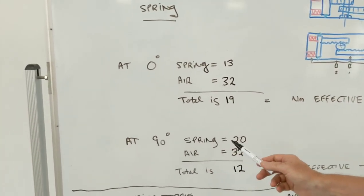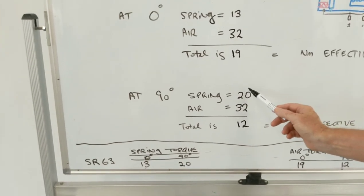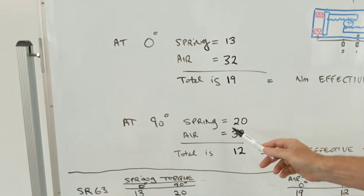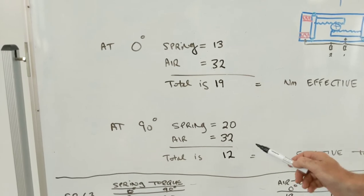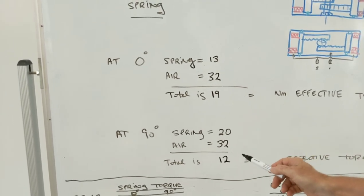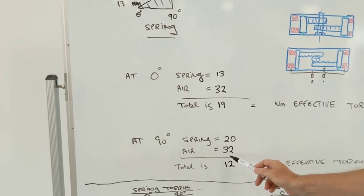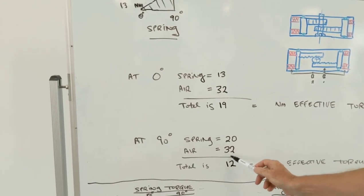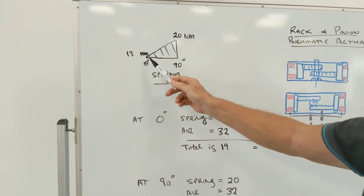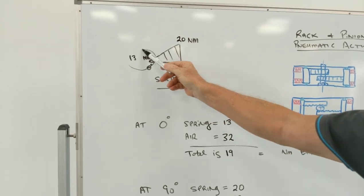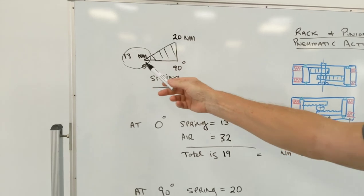And at 90 degrees the spring is further closed and therefore it's got 20 newton meters of force. The air is still 32 so your total is going to be 12 of effective torque. So your important areas are going to be what is left to operate your valve when the springs are fully compressed with your air, in this case 12 newton meters, and when there's no air in the system, the amount of torque we've got left to fully close your valve which in this case is 13 newton meters. Those are your two critical points.